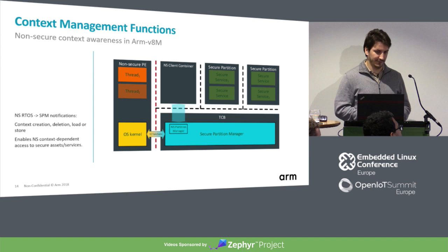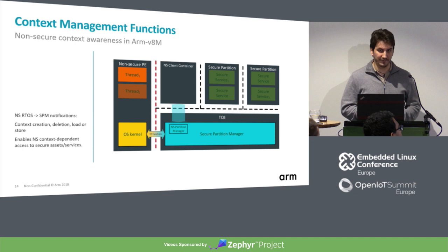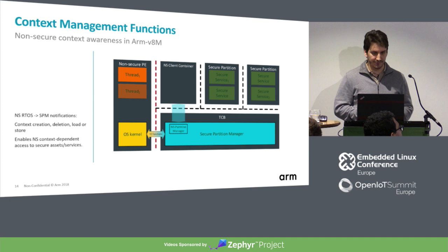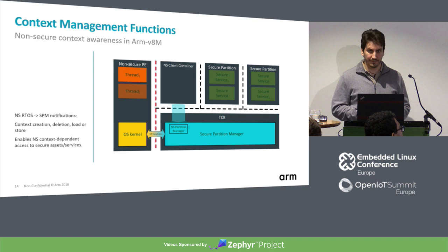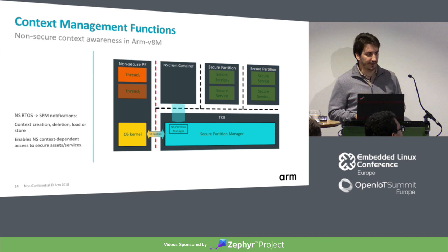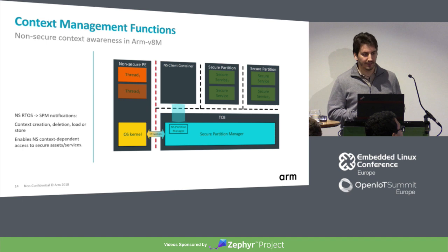There may be a benefit to having awareness in the secure partition manager of the non-secure execution context. For that we have a reference implementation provided as part of CMSIS's TrustZone context management functions, where any time a non-secure thread is created, deleted, loaded, or stored — so any context change happens on the non-secure side — there's a notification, a function call going directly to the secure partition manager. This way we practically mirror on the secure side in a client container the non-secure context, if needed.